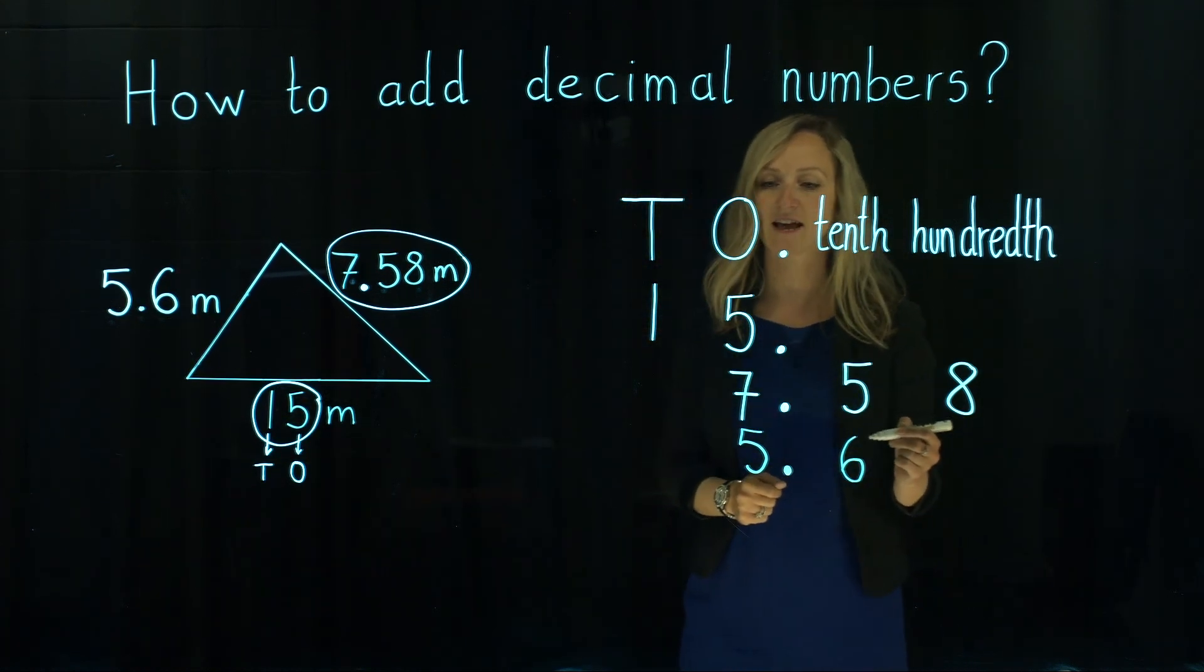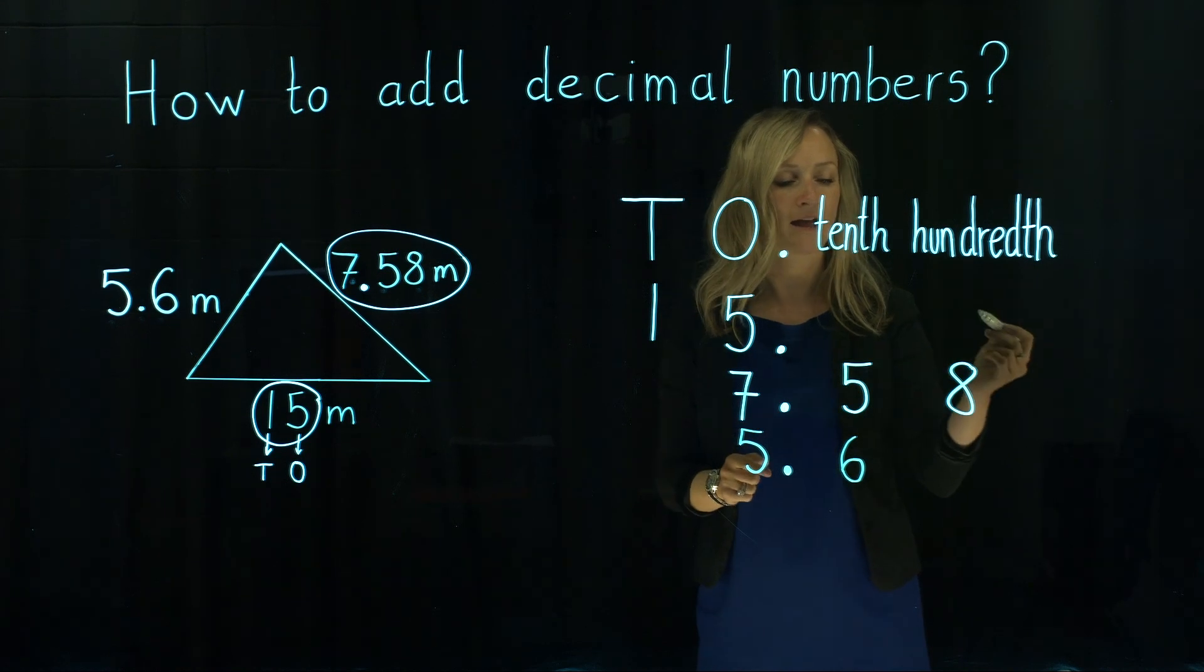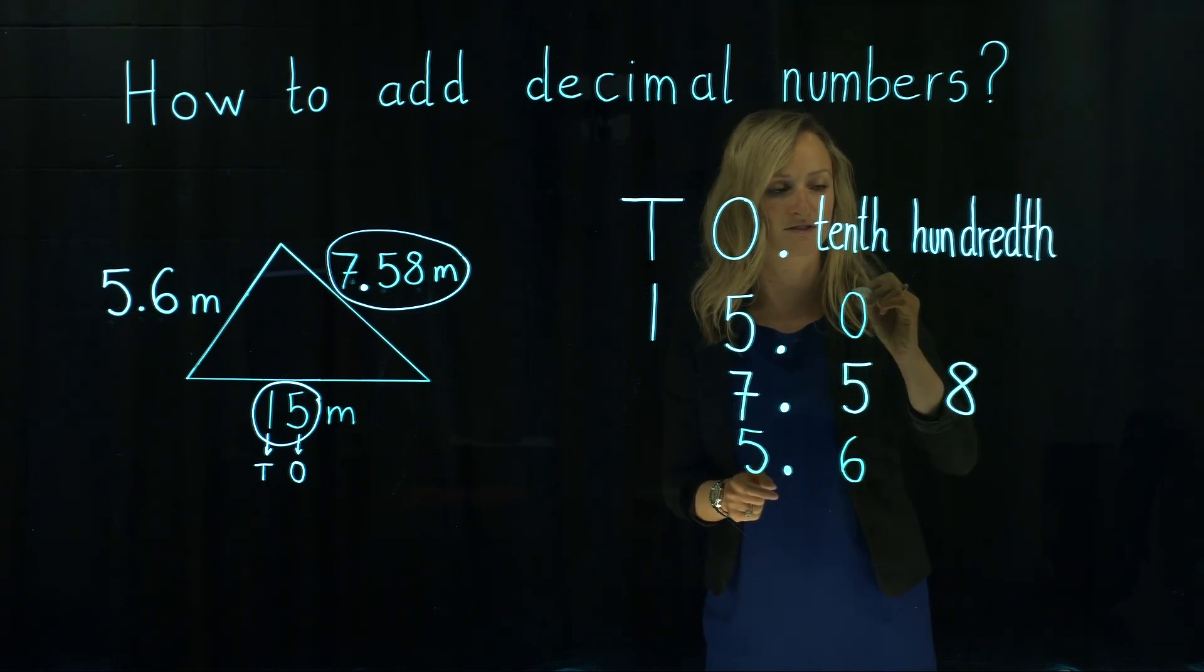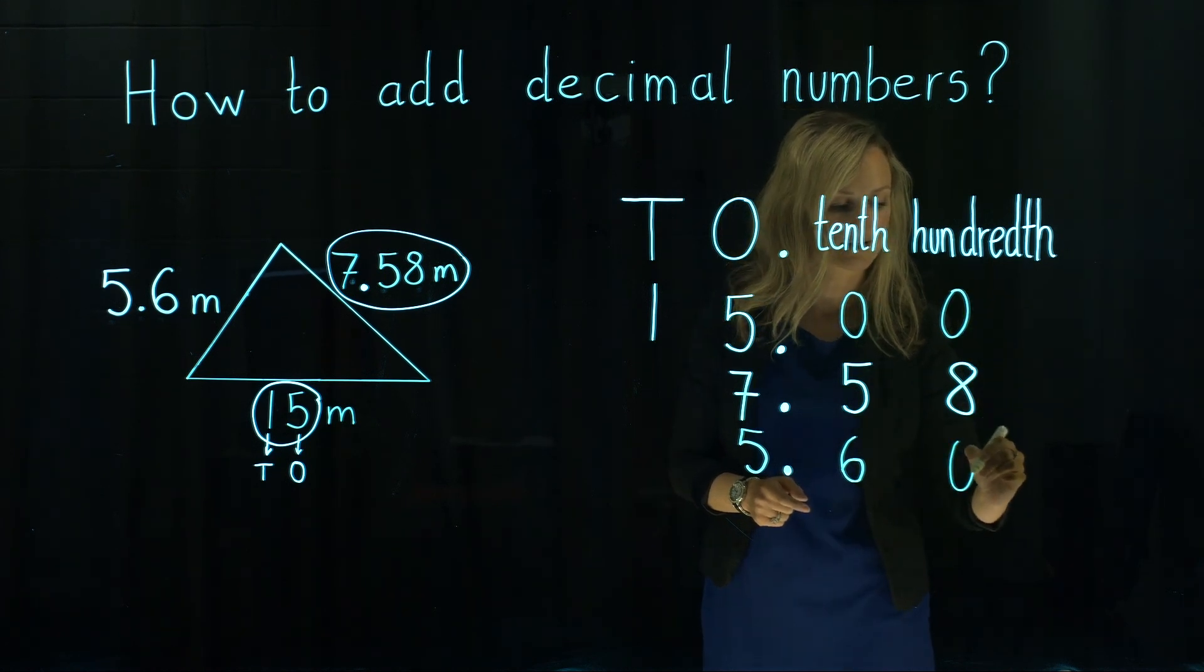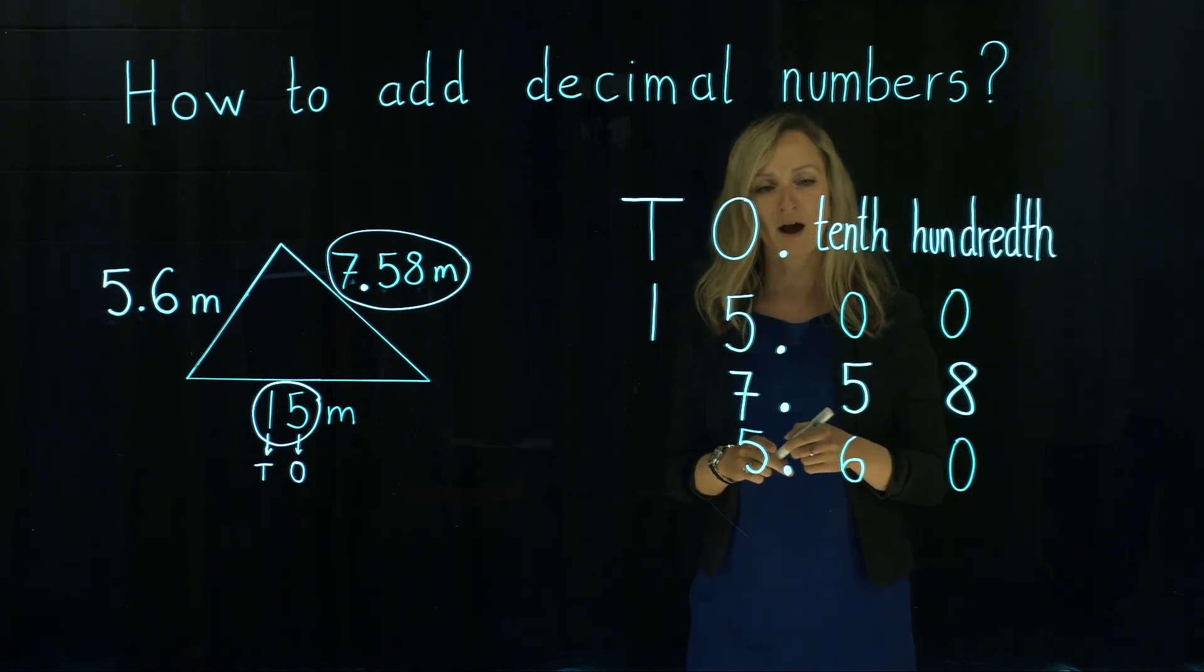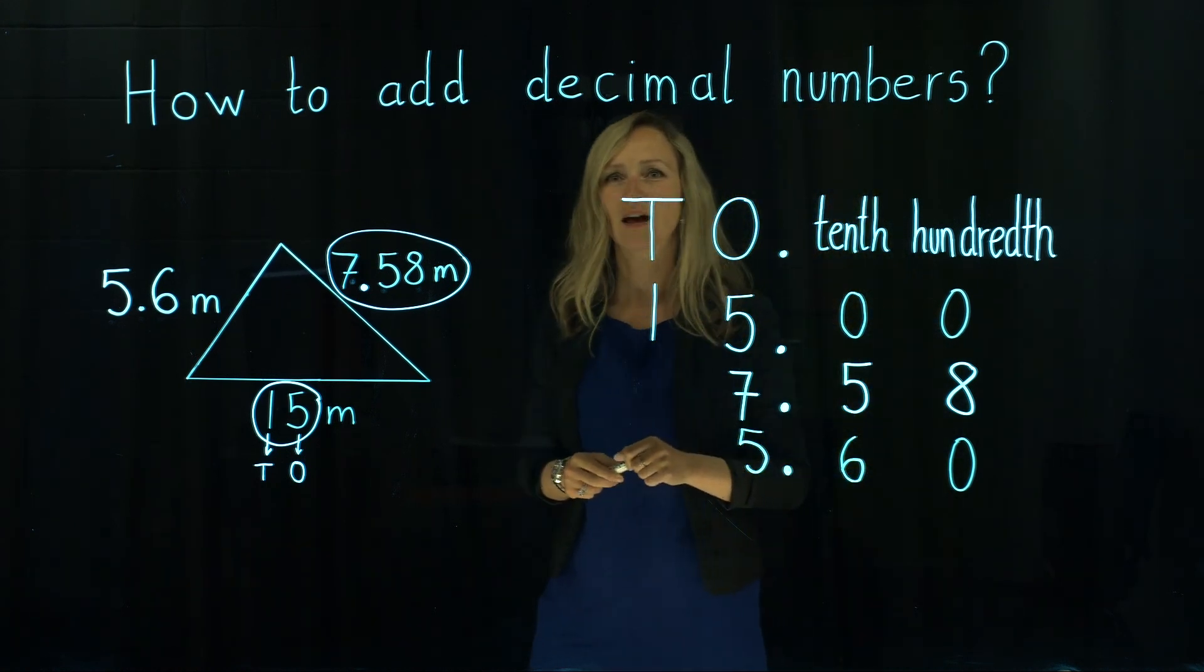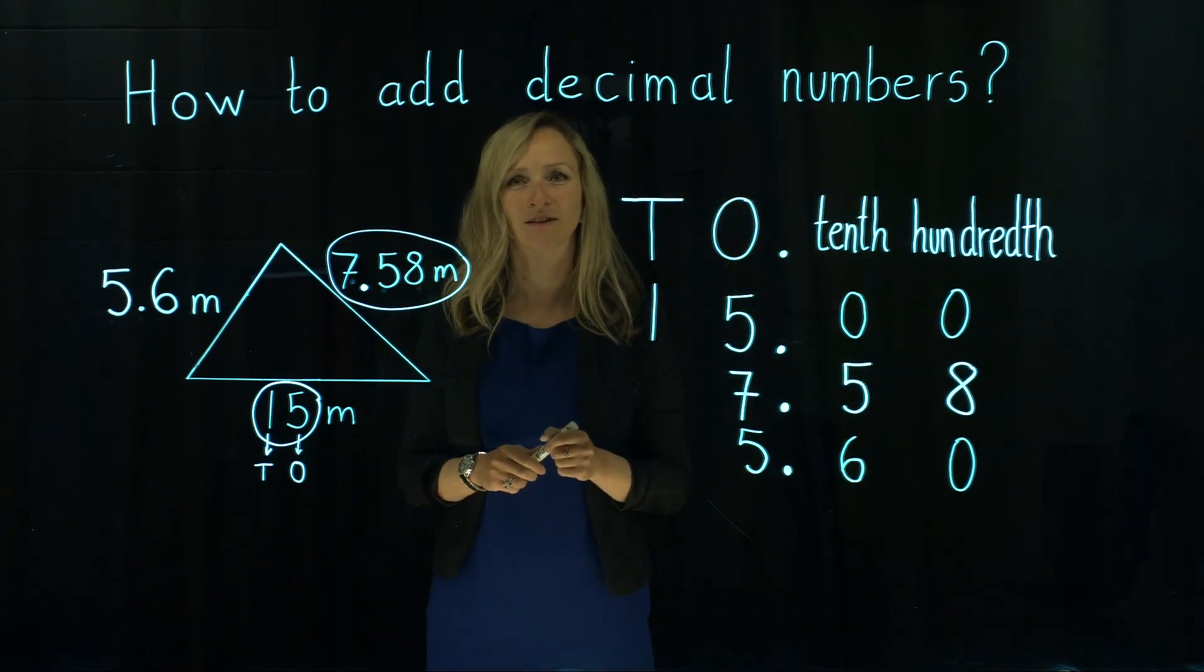Then we can actually say okay we can maybe add zeros at the end of those numbers just to make sure that they are all the same length. And why are we allowed to add those zeros at the end? Because we don't change the value of the number.